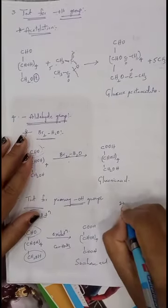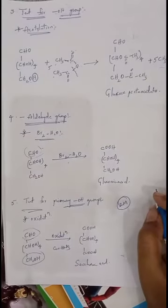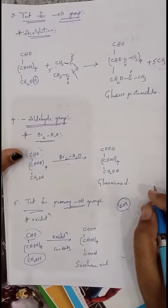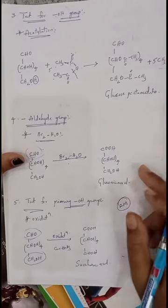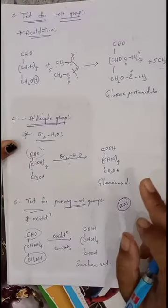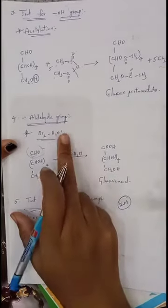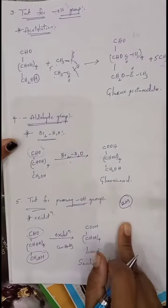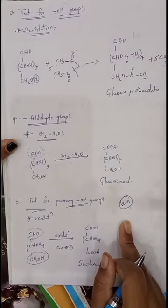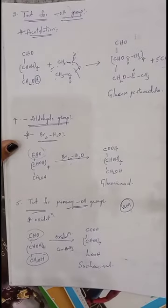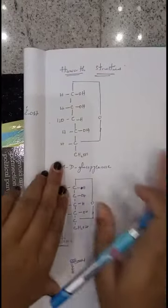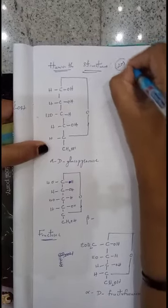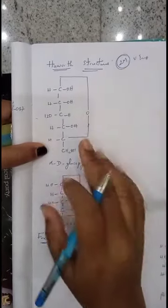Any one property can be asked for two marks. What is the test used to confirm the presence of six carbon atoms in a straight chain in glucose? That is the reaction with HI and red phosphorus. What is the test used to confirm the presence of aldehyde group? That is the bromine water test. Preparation of glucose is also very important for two marks. Now we will see about the Haworth structures of glucose — very important for two marks.